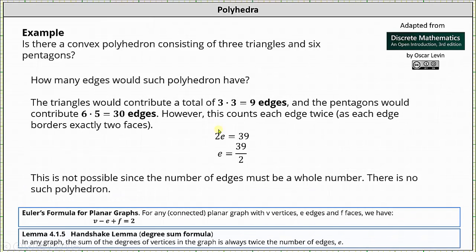And now let's look at some examples. Is there a convex polyhedron consisting of 3 triangles and 6 pentagons? How many edges would such polyhedron have? Well, 3 triangles would give us 3 × 3 = 9 edges, and 6 pentagons would give us 6 × 5 = 30 edges. However, this counts each edge twice as each edge borders exactly 2 faces, which means 2e = 39. Dividing both sides by 2, we have e = 39/2. This is not possible since the number of edges must be a whole number. This indicates there is no such polyhedron consisting of 3 triangles and 6 pentagons.